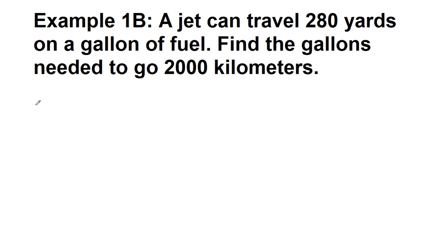Welcome to the second example for Physics 125, Chapter 1. In this example, the new trick that we're showing is what you should do if you have two different numbers in the problem. You can't use both as your starting point, so we have to identify which one gives us a conversion factor. For this example, a jet can travel 280 yards on a gallon of fuel. Find the gallons needed to go 2000 kilometers.